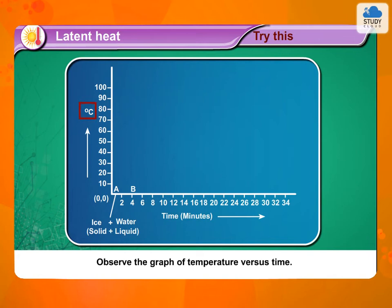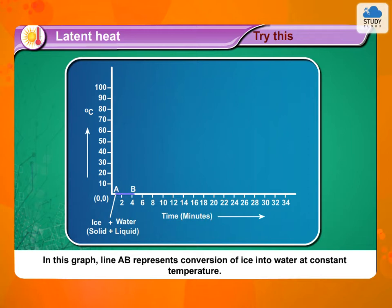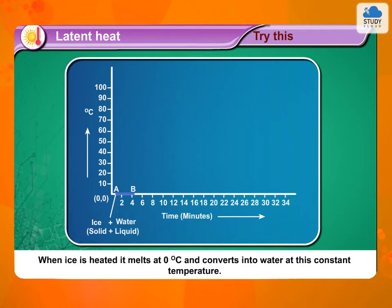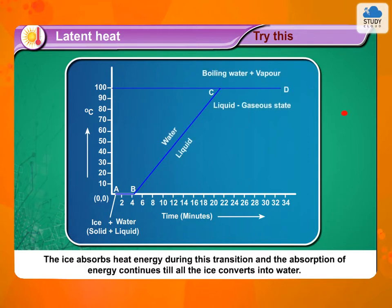Observe the graph of temperature versus time. In this graph, line AB represents conversion of ice into water at constant temperature. When ice is heated, it melts at 0 degrees Celsius and converts into water at this constant temperature. The ice absorbs heat energy during this transition and the absorption of energy continues till all the ice converts into water.